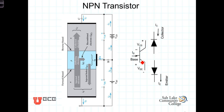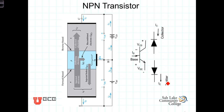Schematically, we have the symbol for the NPN transistor with the collector, the base, and the emitter. The base-to-emitter junction is effectively a diode or PN junction, and the base-to-collector is effectively a PN junction opposing it — back-to-back PN junctions or back-to-back diodes. Under normal operating conditions, the base-to-emitter junction will be forward biased, and the base-to-collector junction will be reverse biased.